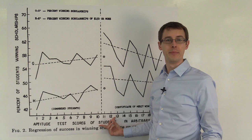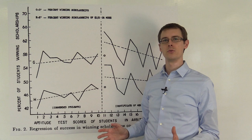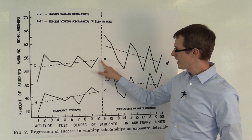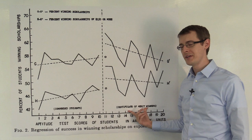And by arbitrary units, they mean that they've normalized the scale of test scores for this population of students. So, right here in this dotted line, that's the cutoff test score for getting a Certificate of Merit.